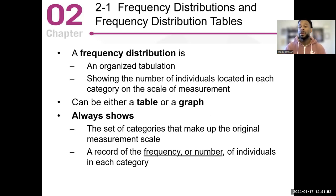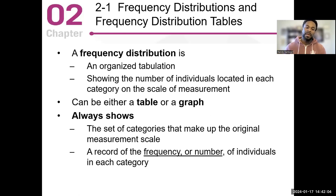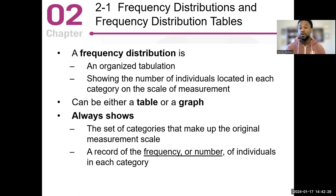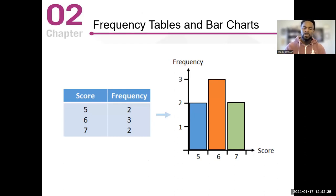It could be in either a table format or a graph, and I'll show you both as we move forward. The frequency distribution table or graph is always going to show you the set of categories that make up the original measurement scale. A frequency is the number of individuals in each category. If we have a class of 10 people — five men, five women — those are our two categories, and five and five would be our frequency count, the number of individuals in each category, male and female.